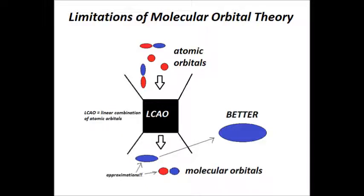You're learning about molecular orbital theory and how it is an improvement over valence bond theory and Lewis structures. However, molecular orbital theory has limitations of its own, and we're going to explore those limitations now. So let's first consider what's actually going on when we do MO theory.